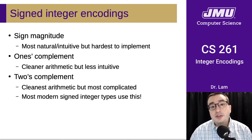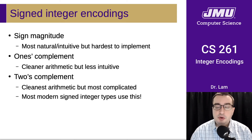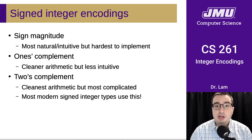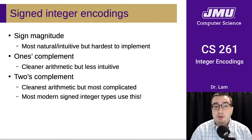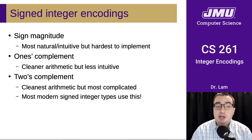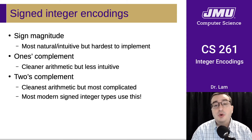Now we have a way of representing unsigned numbers, but we need a way of representing signed numbers — we need to be able to store negative numbers as well as positive numbers. There are actually quite a few different ways of doing this. We're going to study three of them now, and then we'll see one more later on.